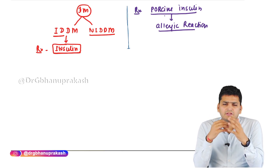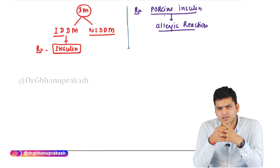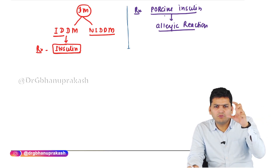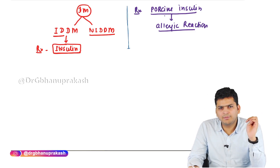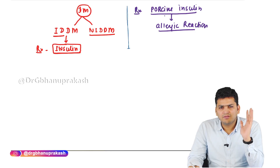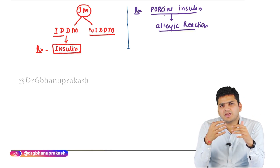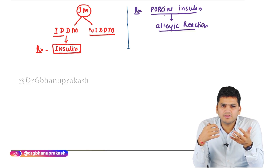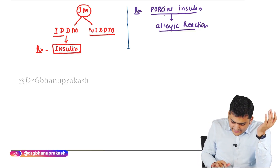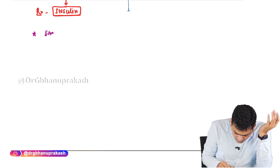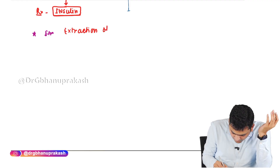The ideal treatment for IDDM is human insulin. To make human insulin in large amounts using recombinant technology, we first need to know the composition of insulin — the sequence of its amino acids. Once we have the sequence, we can replicate it in the lab multiple times. So the first task was the extraction of human insulin.